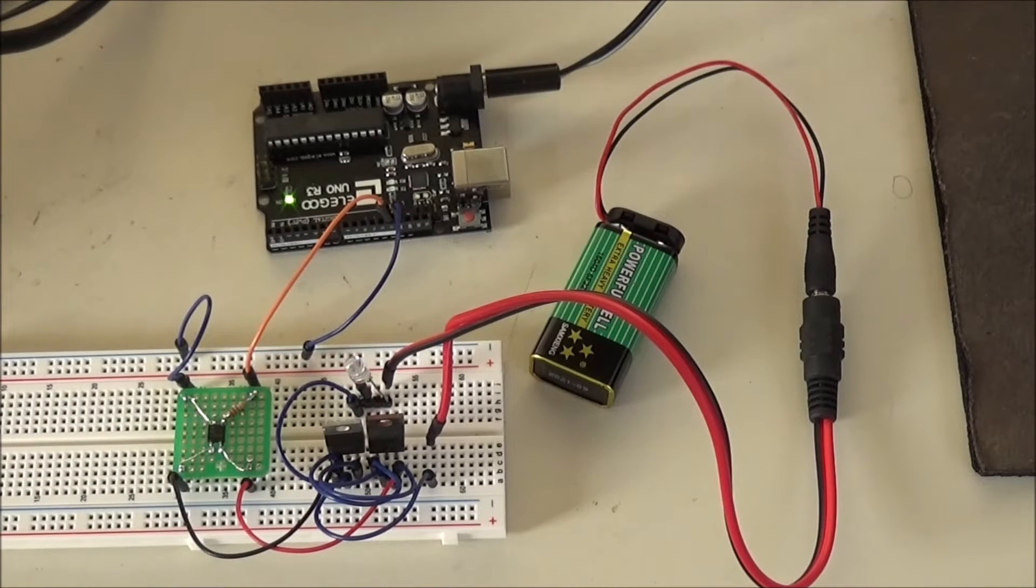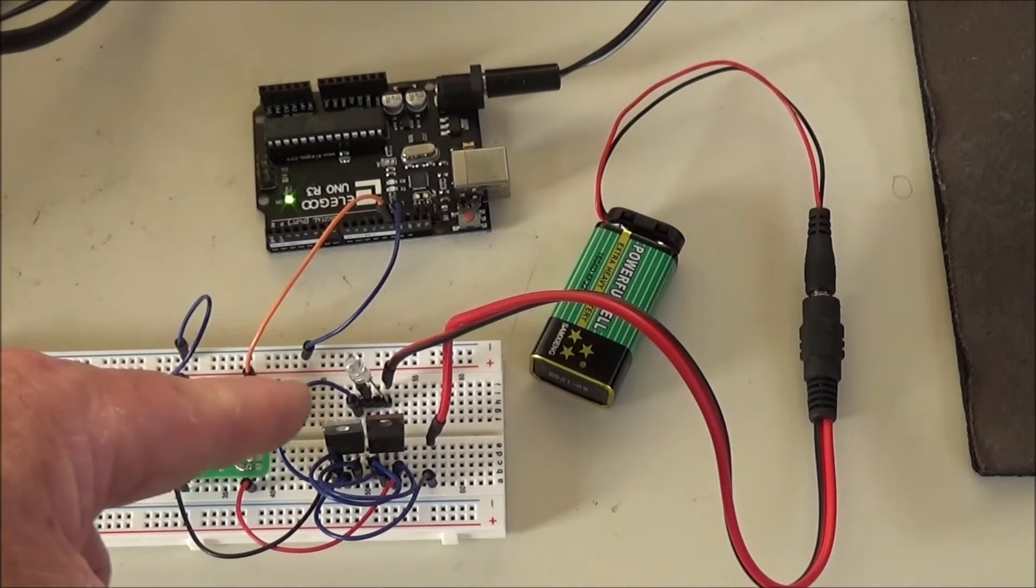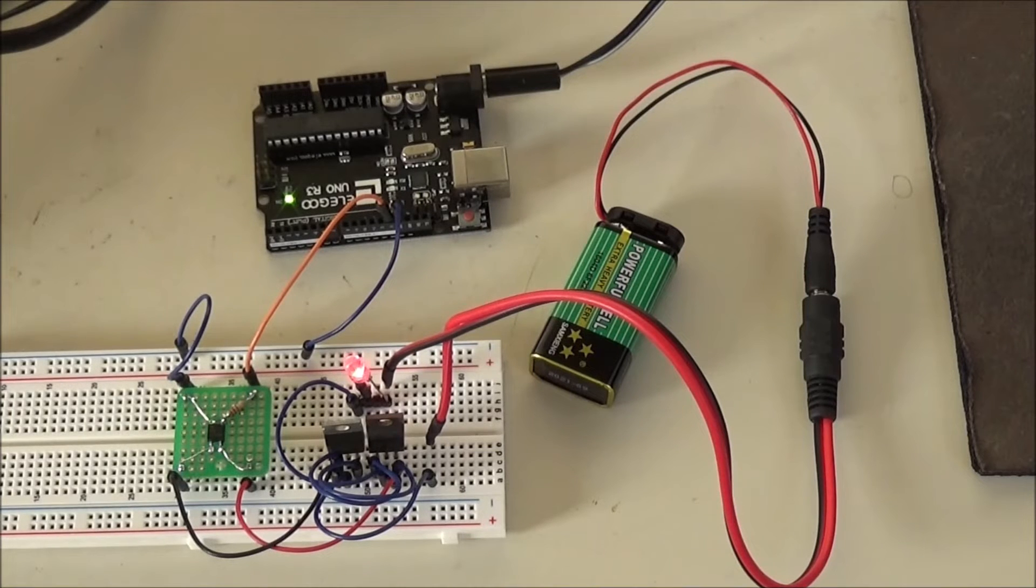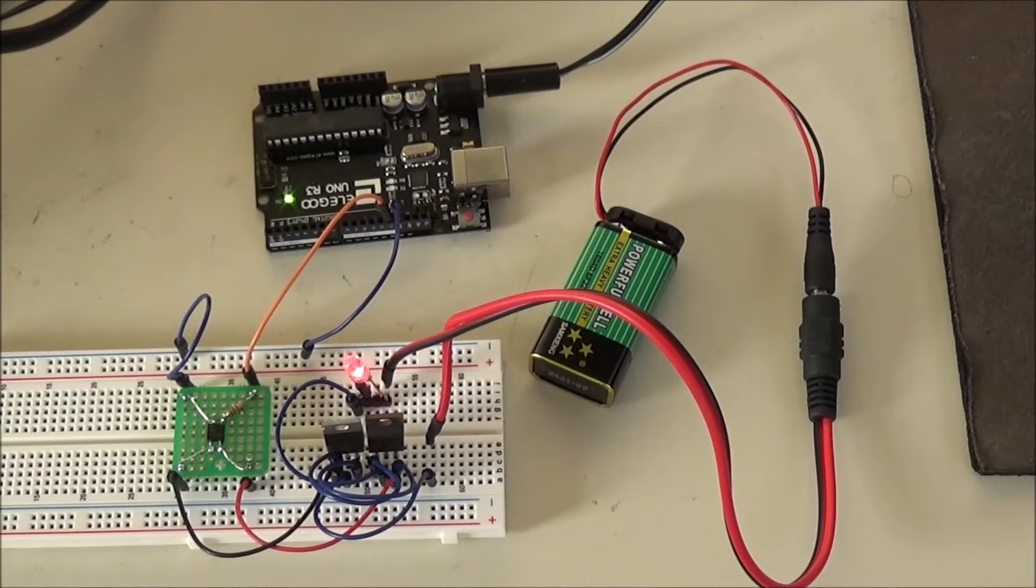As you can see, I'm blinking the LED on and off. This is a bi-directional output. You can switch AC with it, but there is no polarity like you have with a normal MOSFET circuit that has to be connected a particular way.